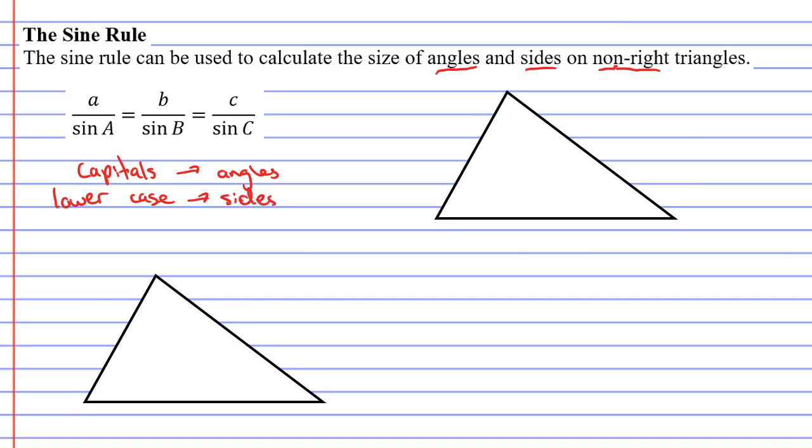So how does that work? Well, if you look to the right, we have a triangle. Each angle is represented by a capital letter. So this angle here is represented by capital A. Let's call the angle at the top capital B, and the angle at the right will go with capital C.